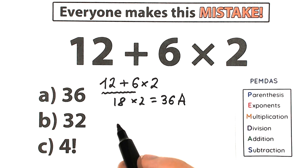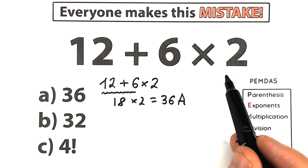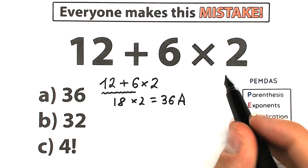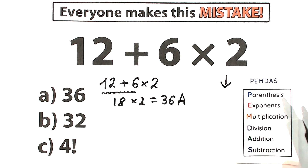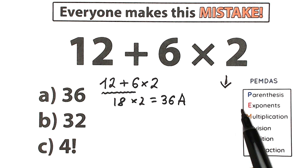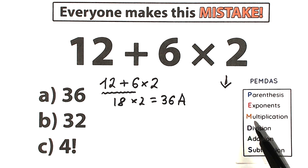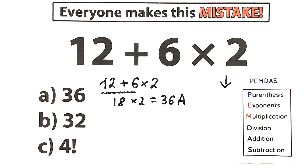For this question, let's look at the PEMDAS order of operations. This is the most popular order of operations in the world. We evaluate the expression inside parentheses first, then exponents, then multiplication, then division, and finally addition and subtraction. Parentheses have the highest priority, and addition and subtraction have the lowest priority.